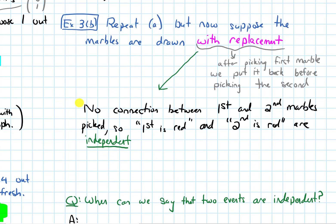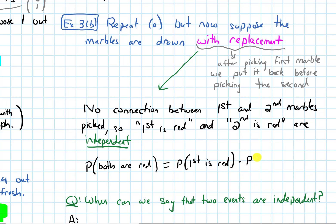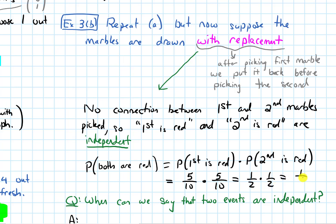Using that, the probability that both are red equals the probability that the first marble is red times the probability that the second one is red — because they're independent, no conditional probability is needed. The probability that the first is red is 5 over 10, and the same for the second: 5 over 10, since there are 5 red marbles out of 10 total each time. Simplifying: one half times one half equals one fourth. That's our probability when drawing with replacement.